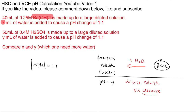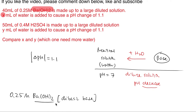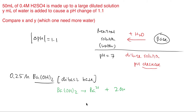Now let's calculate the initial pH. We have 0.25 molar BaOH₂, and BaOH₂ is a dibasic base. Dibasic means one mole of the base provides two moles of OH⁻. So if you have 0.25 molar of the base, the OH⁻ concentration will be 2 multiplied by that.